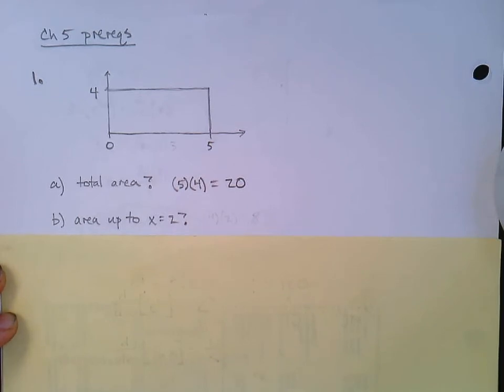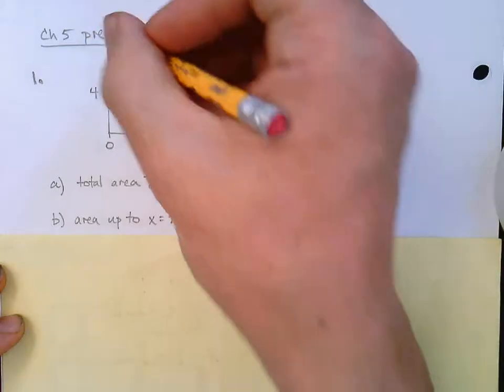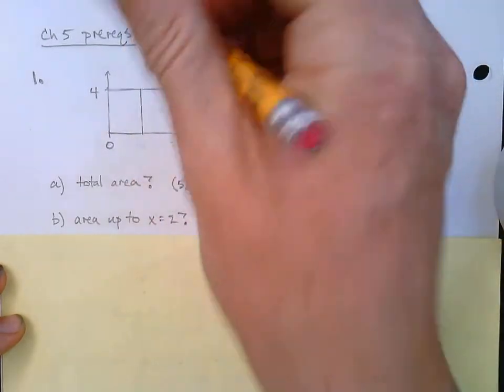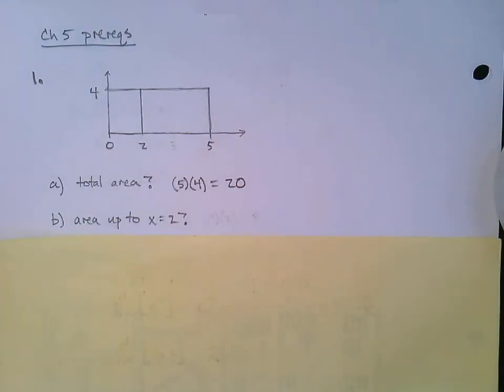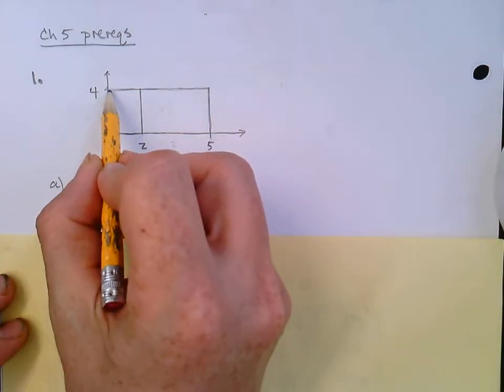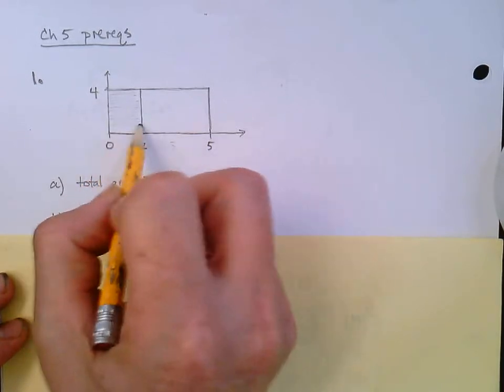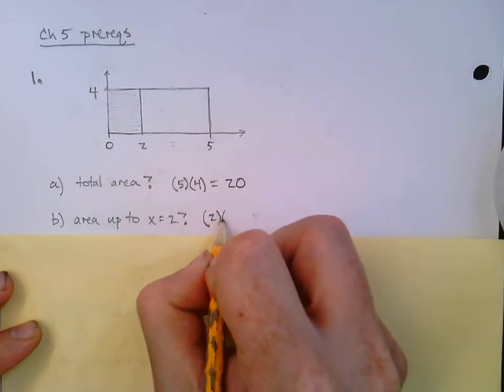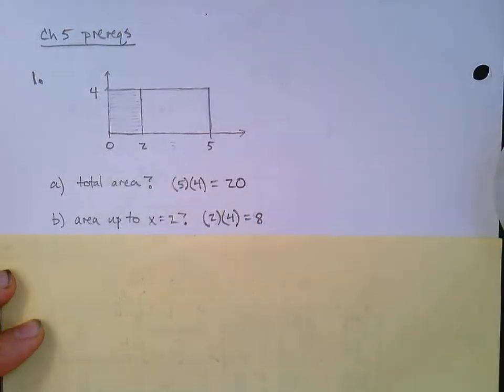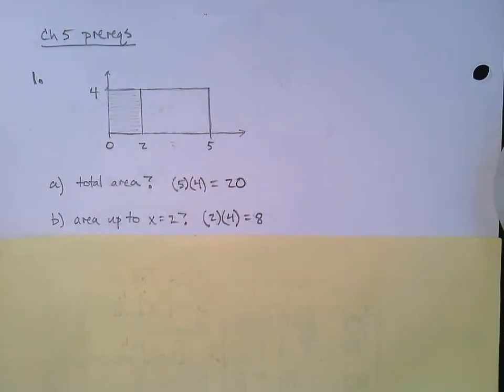Now, here's an interesting question. What is the area up to X equals 2? So if this is 5, maybe we could sort of guess. Maybe about right there is 2. So the area up to 2 would be the area from 0 to 2. From X equals 0 to X equals 2. What is that area? Well, again, base times height, right? 2 times 4, which gives us 8.